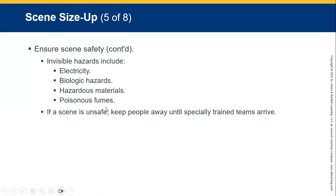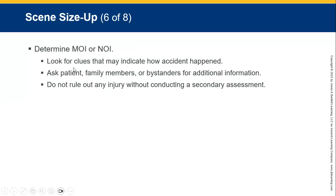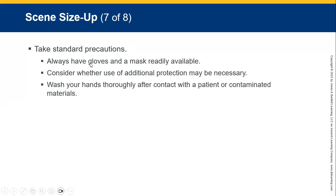Always look for clues that indicate what happened and how the accident was caused. Ask the patient, family, and bystanders for any additional information. Do not rule out any injury without conducting a secondary assessment. Take precautions always — body substance isolation, gloves, masks if available. Consider additional protection if necessary, and wash your hands thoroughly after contact with the patient or contaminated materials.